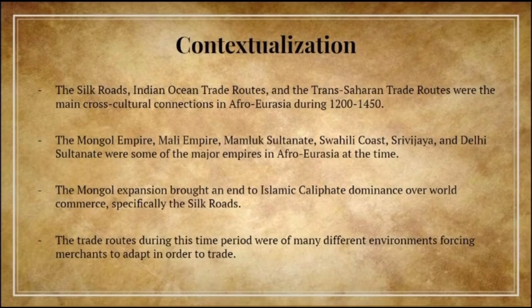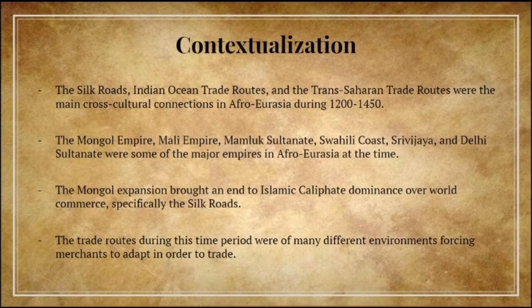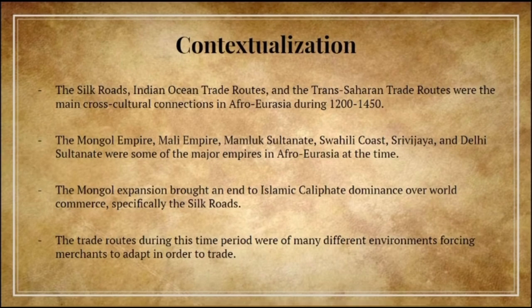Contextualization: The Silk Road, Indian Ocean Trade Routes, and the Trans-Saharan Trade Routes were the main cross-cultural connections in Afro-Eurasia during 1200 and 1450. The Mongol Empire, Malay Empire, Mamluk Sultanate, Swahili Coast, Srivijaya, and Delhi Sultanate were some of the major empires in Afro-Eurasia at the time. The Mongol expansion brought an end to Islamic caliphate dominance over world commerce, specifically the Silk Roads. The trade routes during this time period spanned many different environments, forcing merchants to adapt in order to trade.